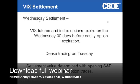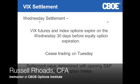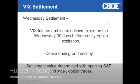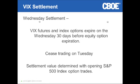We're going to talk about settlement. The VIX futures and index options both share a settlement price, much like the S&P 500 index options and futures on that quarterly expiration — those AM settled products share a settlement price as well. The contracts cease trading on Tuesday afternoon, the day before settlement, and then the settlement value is determined with opening S&P 500 index option trades.